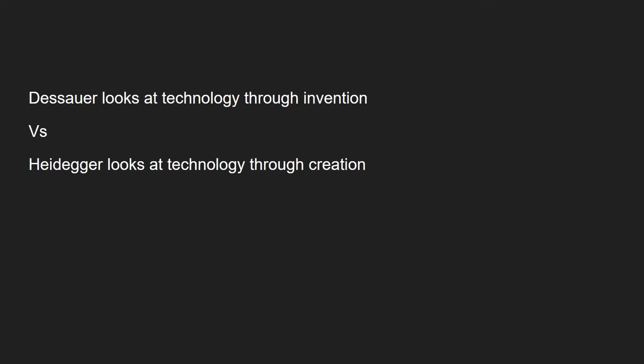Let's begin with invention. Dessauer, like Heidegger, suggests that the essence of technology can be found in how it acts in our world. However, while Heidegger analyzes the cosmic functions of creation and fits technology within one of these creation systems, Dessauer approaches this from the human scale of invention. So, how does Dessauer analyze invention? He describes invention as envisioning the pre-existing, and explains it as follows.